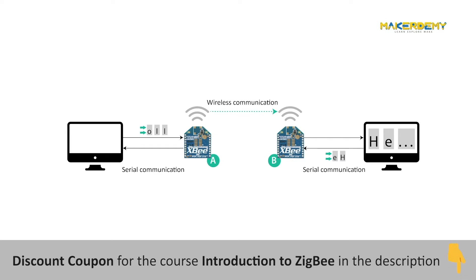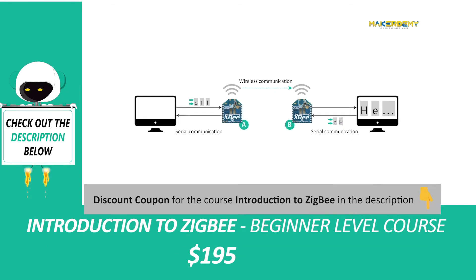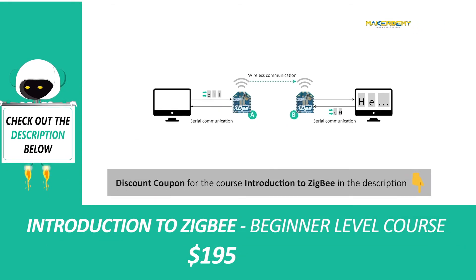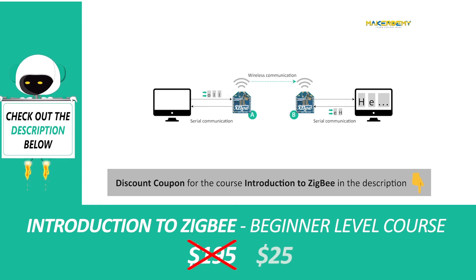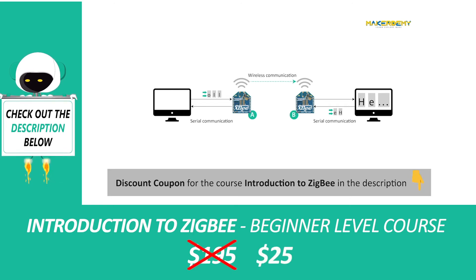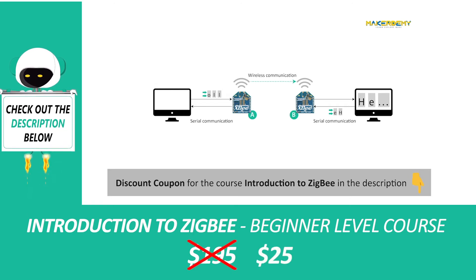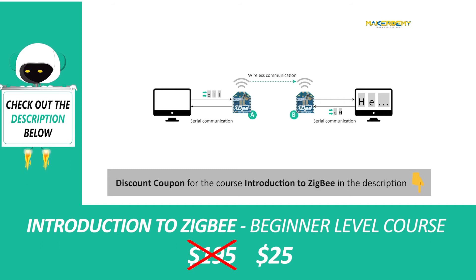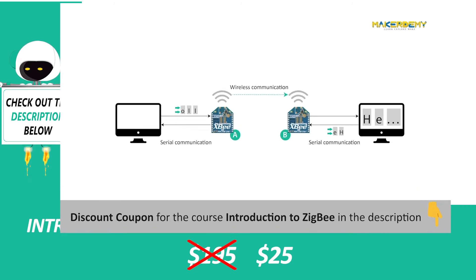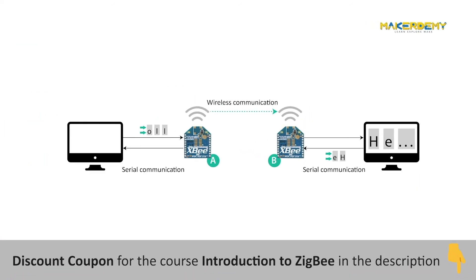Every SigBee device communicates with each other over the air, sending and receiving wireless messages. The devices themselves can only transfer those wireless messages — they cannot manage the received or sent data. They transmit data coming from their serial input wirelessly, and on the receiving end, they send anything received wirelessly to the serial output.